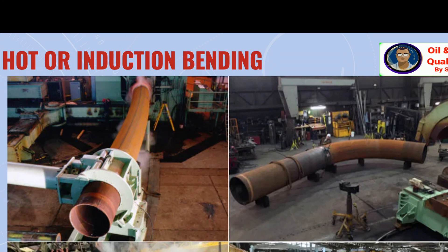Let us discuss the induction bending process in brief. The following steps are performed for induction bending of pipe or pipeline systems. The pre-inspected pipe to be bent is placed in the machine bed and clamped hydraulically. Induction heating coils and cooling coils are mounted to ensure uniform heating. An induction coil can be adjusted with three plane movement.